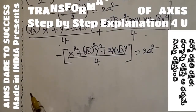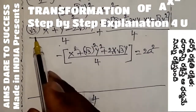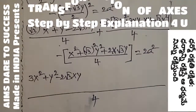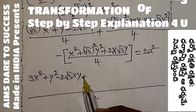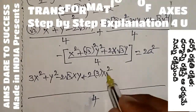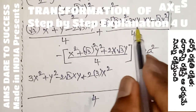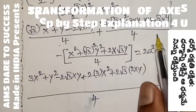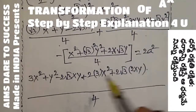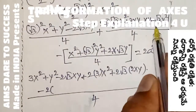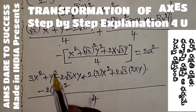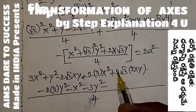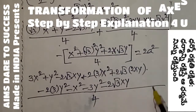Taking LCM = 4: expand to get 3X² + Y² − 2√3·XY, plus 2√3 times (√3X² + 3XY − XY − √3Y²), minus (X² + 3Y² + 2√3·XY), all over 4 = 2a². Multiplying 2√3 inside: 2·3·X² and combining XY terms — 3XY − XY = 2XY — giving 2√3·2XY. The minus bracket gives −X² − 3Y² − 2√3·XY.